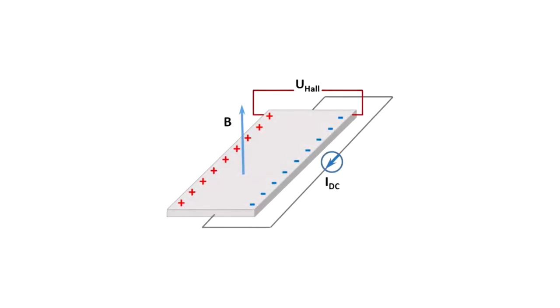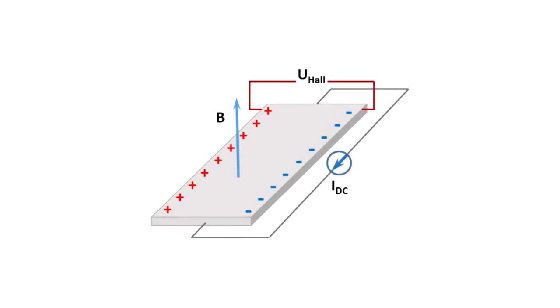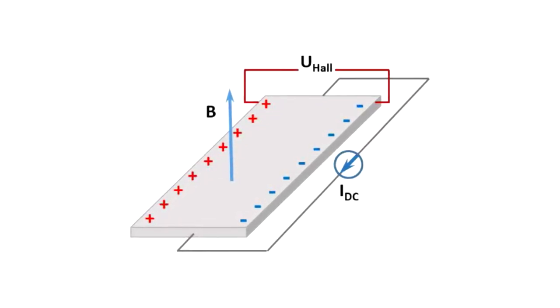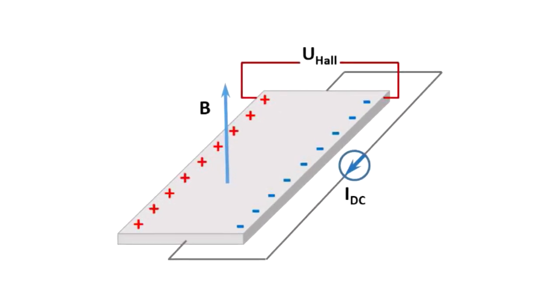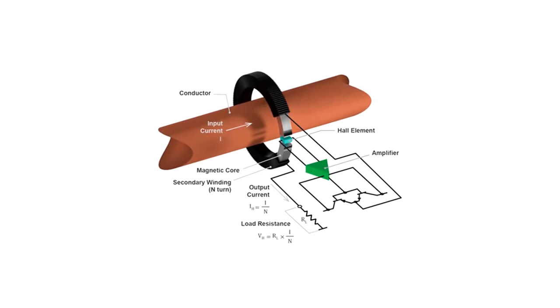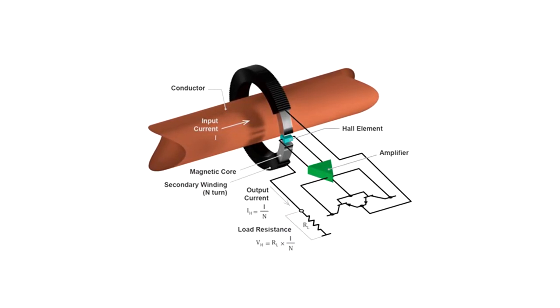The Hall effect is the production of a voltage difference across an electrical conductor when a magnetic field is applied perpendicular to the current. Cheap current clamps cannot measure DC current most of the time because they miss the extra components needed to measure DC.